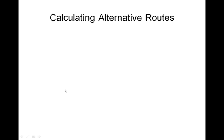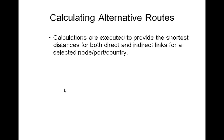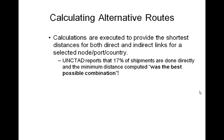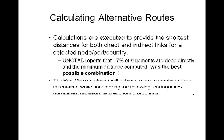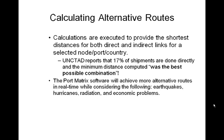In calculating the alternative routes, calculations are executed to provide the shortest distance for both direct and indirect links for a selected node, port, or country. UNCTAD reports that 17% of shipments overall are done directly, and the minimum distance computed was considered the best possible combination. The port matrix software will achieve more alternative routes in real time while considering the following hazards: earthquakes, hurricanes, radiation, and economic problems.